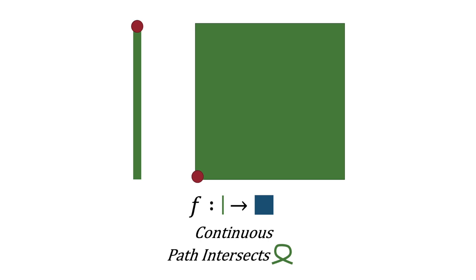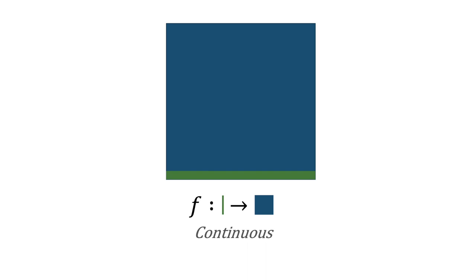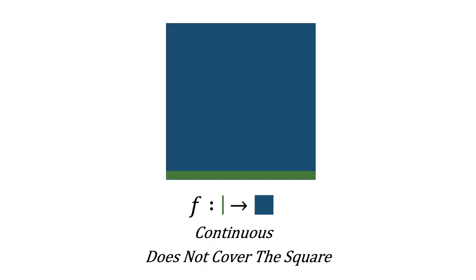I want to show you one more way we can map the line segment onto the square. We could just put the line segment on the bottom edge of the square, and this in fact would be continuous. I think we can agree that it would be rather silly to say that this demonstrates a line and a square have the same shape — the line doesn't even begin to cover the vast majority of the square.